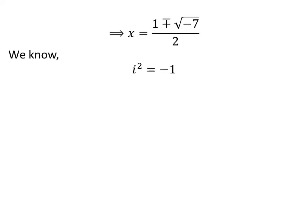We know square of imaginary unit i is minus 1. So, application of the above fact gives us x is equal to 1 minus or plus square root of 7 times square of i upon 2.